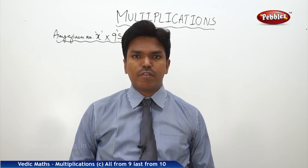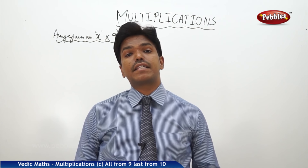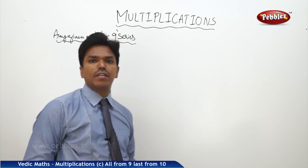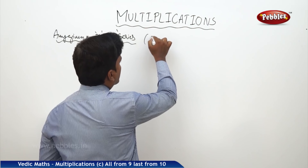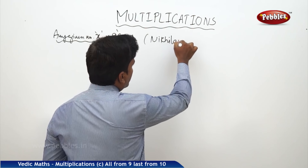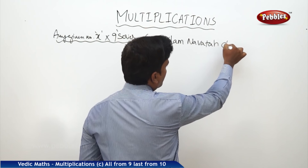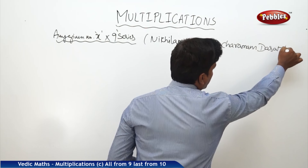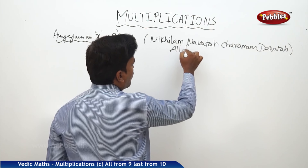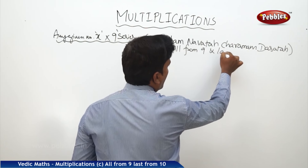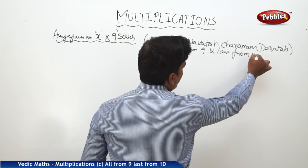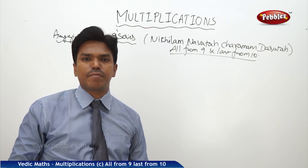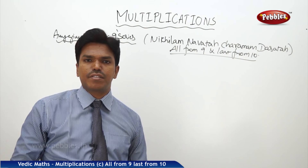Now we will see another concept in our multiplication techniques: multiplication of a number by a series of nines. We are going to use one sutra, Nikhilam Navataha Cheramam Tasataha, which means 'all from 9 and last from 10.' We will see how to use this technique in case of multiplication by a series of nines.